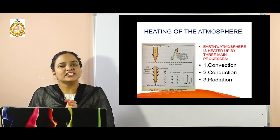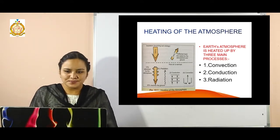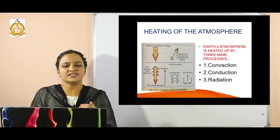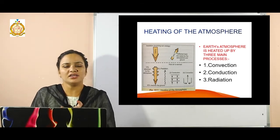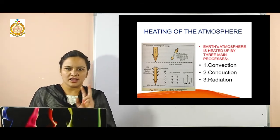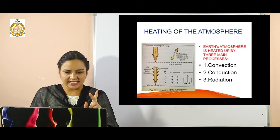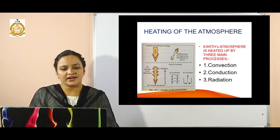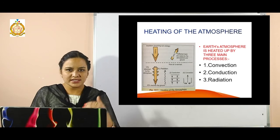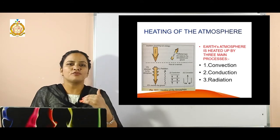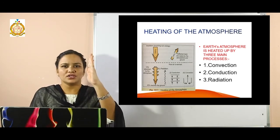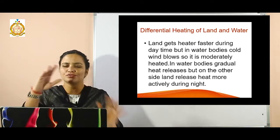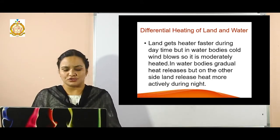Air gets warm due to radiation. Earth's atmosphere is heated by three main processes: first is convection, second is conduction, and the third is radiation. In conduction, air gets warmer and rises upward. In convection, it goes into circular motion.